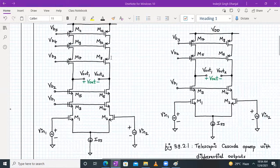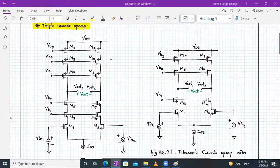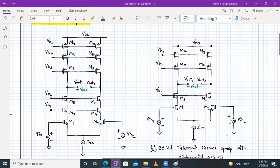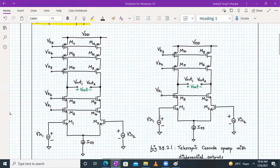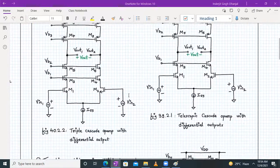If I want to enhance my gain further, I can stack one more transistor over the top and this becomes my triple cascode op-amp, as shown in the figure. On the left we have triple cascode op-amp, on the right we have telescopic cascode op-amp with differential output. The difference is we have stacked M6 and M5 transistor over M3 and M4, and M11 and M12 transistors over M7 and M8.